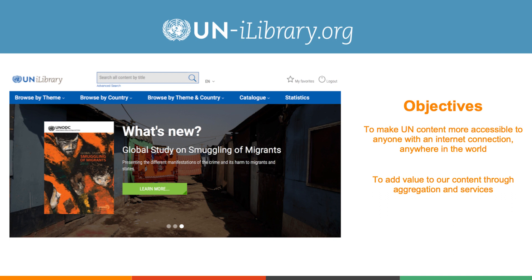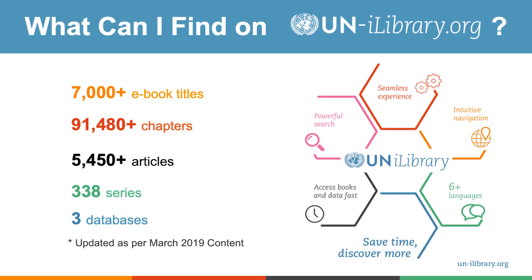The objectives of the UN iLibrary are to make UN content more accessible to anyone anywhere in the world with an internet connection and to add value to our content through aggregation and services. As of the end of March 2019, there are over 7,000 e-book titles, over 91,000 chapters, 5,450 articles, 338 series, and three databases on the UN iLibrary.